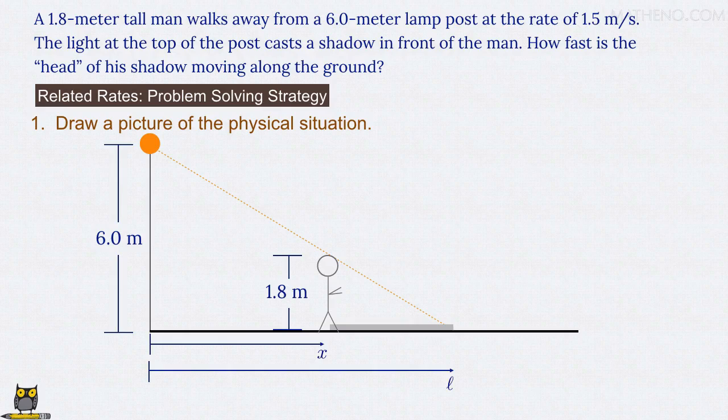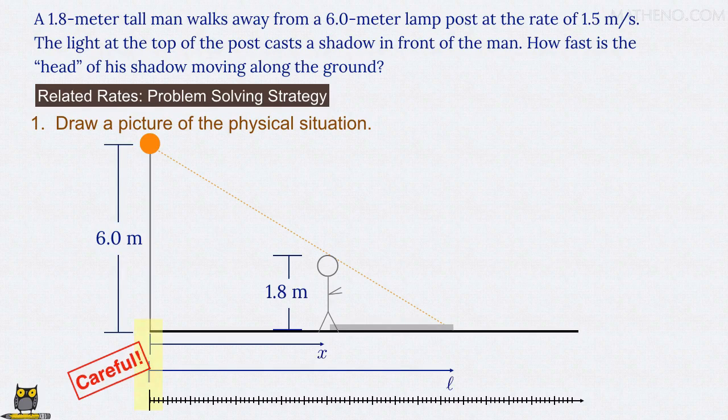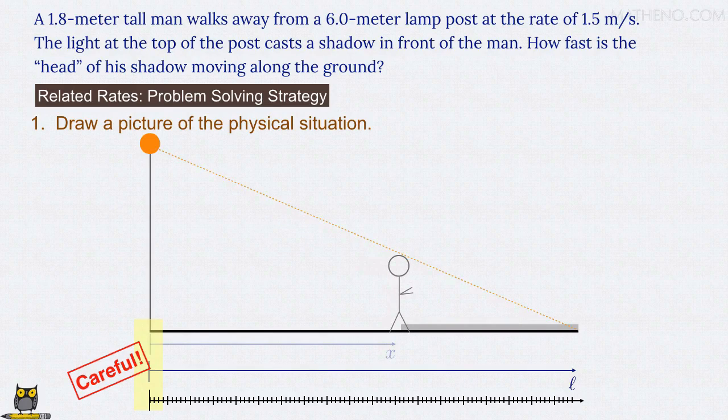Now we're making a choice here where you need to be careful, and almost no one talks about this subtle point. We're measuring everything using the lamp post as the origin, as if we've painted a coordinate system on the ground. This coordinate system doesn't move when the man walks, which is what we want.